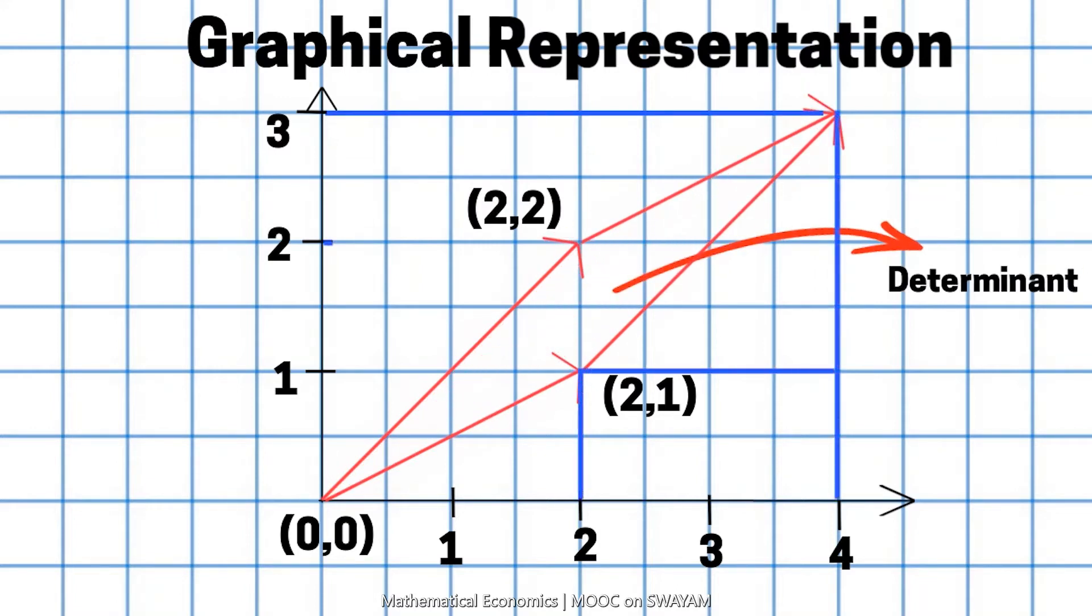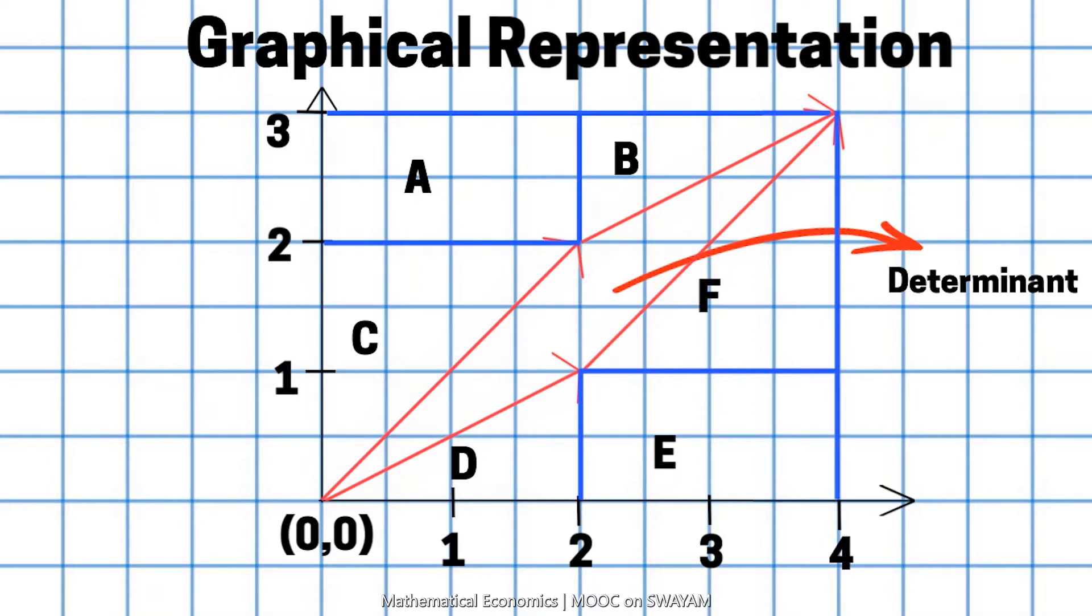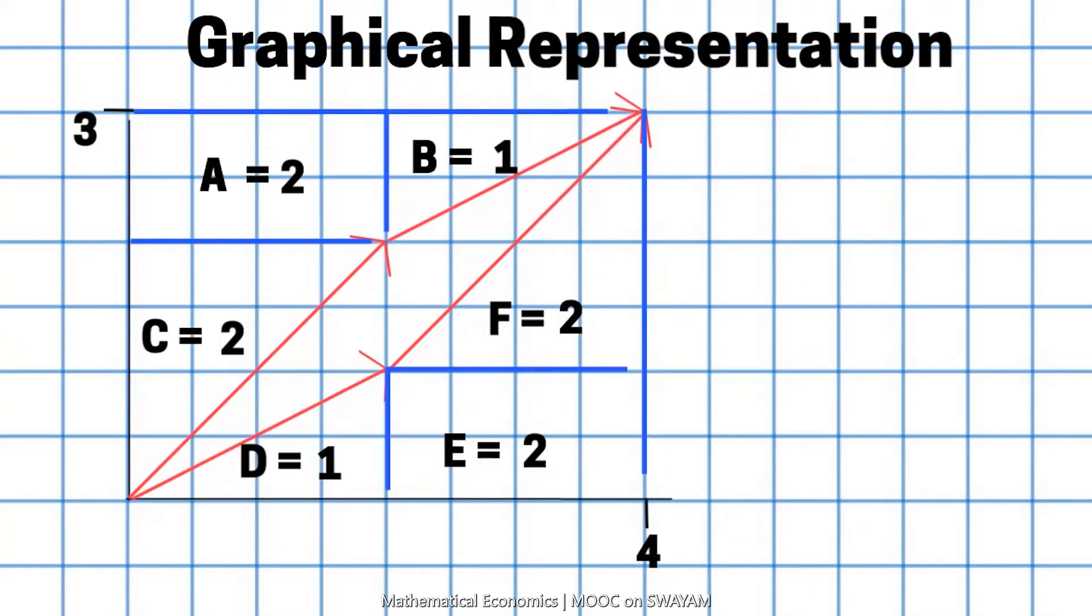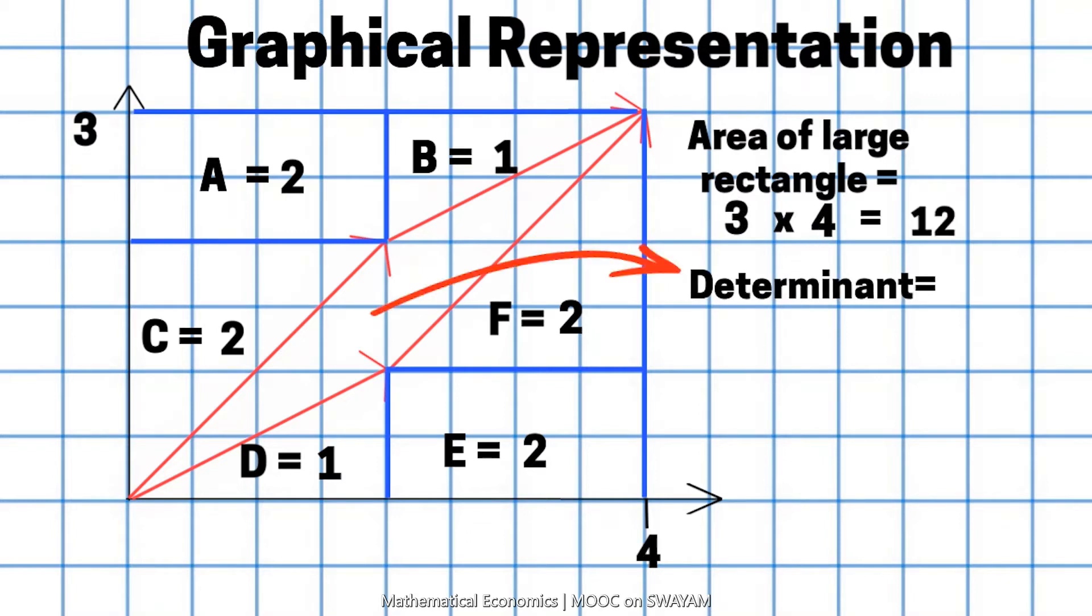In order to find the determinant, we calculate the area of the large rectangle and then subtract the sum of the area of the small rectangles and triangles from the area of the large rectangle. This gives us 12 minus 10 is equal to 2.